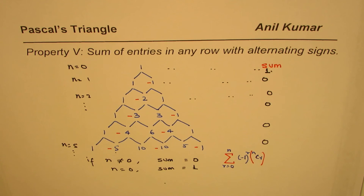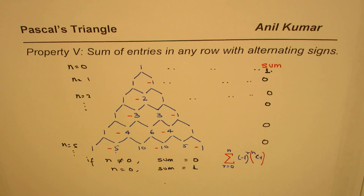So that is property five: the sum of entries in any row with alternating signs will be either one or zero — it is one for n equals zero, but otherwise it will be zero. I hope that helps, thank you and all the best.